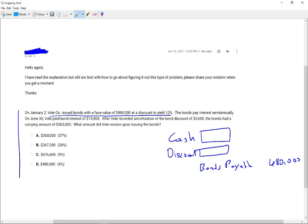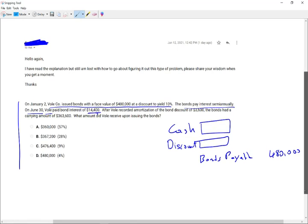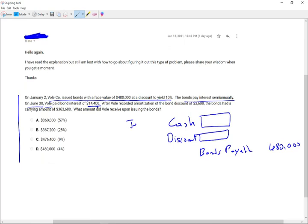The bonds pay interest semi-annually. That's helpful. On June 30th, which is after six months, the company paid interest of $14,400. Excellent. So what did we do on, this was January 1st, this was, I'm sorry, January 2nd. June 30th, I paid interest of $14,400. They told me here I paid interest. Therefore, I credited cash $14,400.